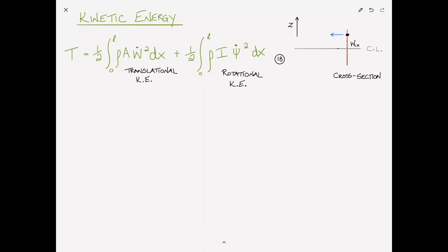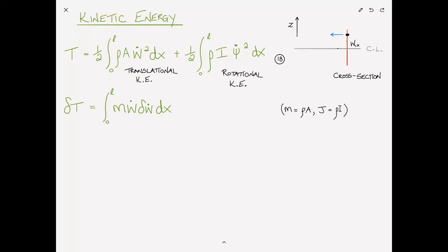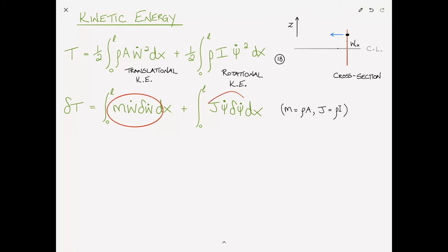In the Euler-Bernoulli beam, the rotational kinetic energy was said to be negligible — which is valid for slender beams. But as beams become shorter and stubbier, rotational kinetic energy becomes increasingly important and must be included for a complete beam theory. We can write ρA = m (running mass per unit length) and ρI = J (mass moment of inertia). Taking the variation of T: δT = ∫₀ᴸ m·ẇ·δẇ dx + ∫₀ᴸ J·ψ̇·δψ̇ dx, equation 19.